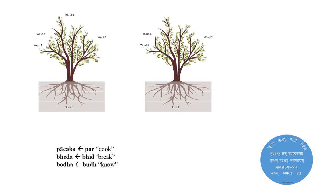Yasaka applied a practical and scientific method to deriving the origin of words. He was a secular man and did not ascribe any ritualistic, mystic, or supernatural elements to his analysis. Yasaka's Nirukta is the earliest surviving etymological treatise in the world.